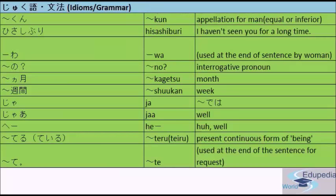To review: 'kun' is an appellation for men; 'hisashiburi' is long time no see; 'wa' is used at the end of a sentence by a woman to indicate emotion or admiration; 'no' is an interrogative pronoun; 'ka-getsu' is a suffix for months; 'shukan' is a suffix for weeks; 'ja' is equivalent to 'dewa' meaning well; 'teru' is the present continuous form; and 'te' is used at the end of a sentence for a request. We have completed the tango and grammar for lesson 16. Keep practicing — I'll see you in Part 2. Yoroshiku onegaishimasu!